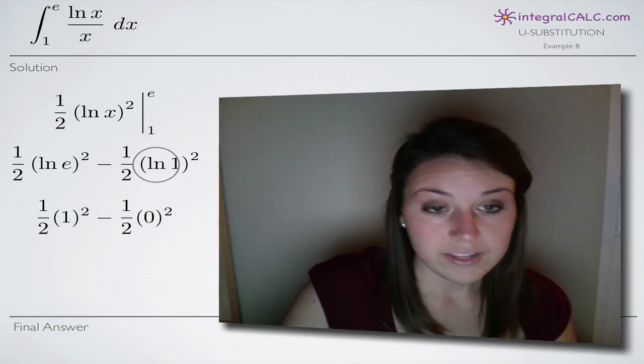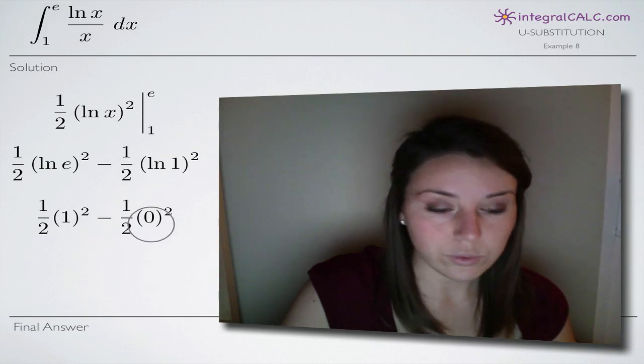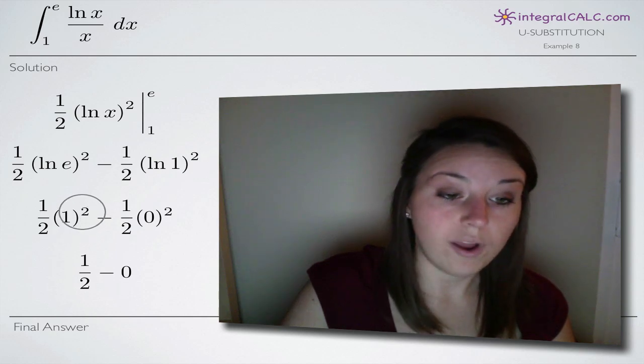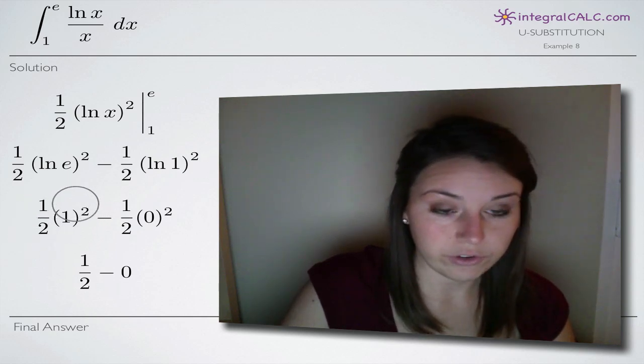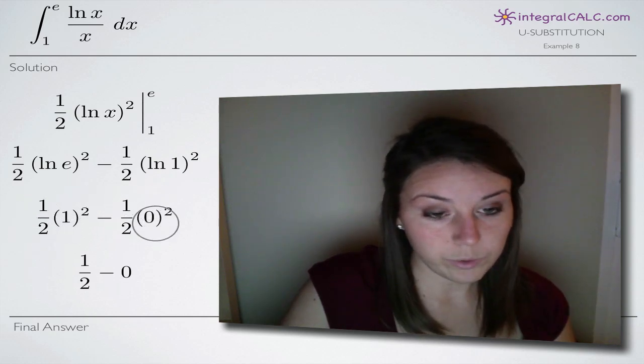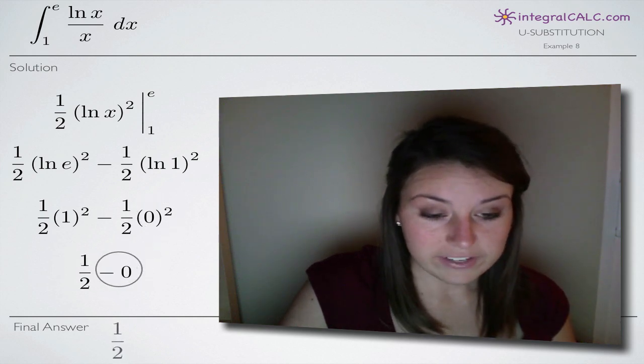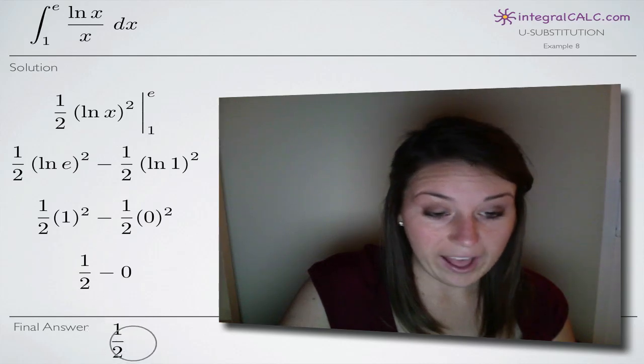So we end up with 1 here. The natural log of 1 is equal to 0. So we plug those two in and for our first term here, 1 squared is 1 so we get 1 half for the first term. And because everything here is multiplied by 0, we'll get 0 for the second term. So 1 half minus 0 obviously gives us our final answer of 1 half.